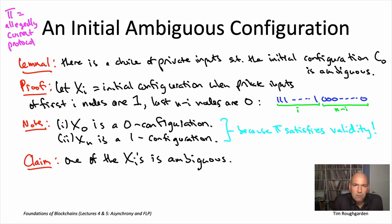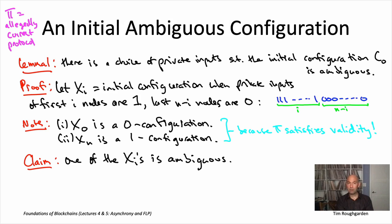The infinite sequence of ambiguous configurations is exhibited using two lemmas, analogous to a base case and inductive step. Lemma one, proved in lecture four, tells us how to get started. Among the two-to-the-n different initial configurations (one per combination of private inputs), lemma one guarantees at least one is ambiguous. This gives us a starting point where the adversary still has control over whether the final output is all zeros or all ones.